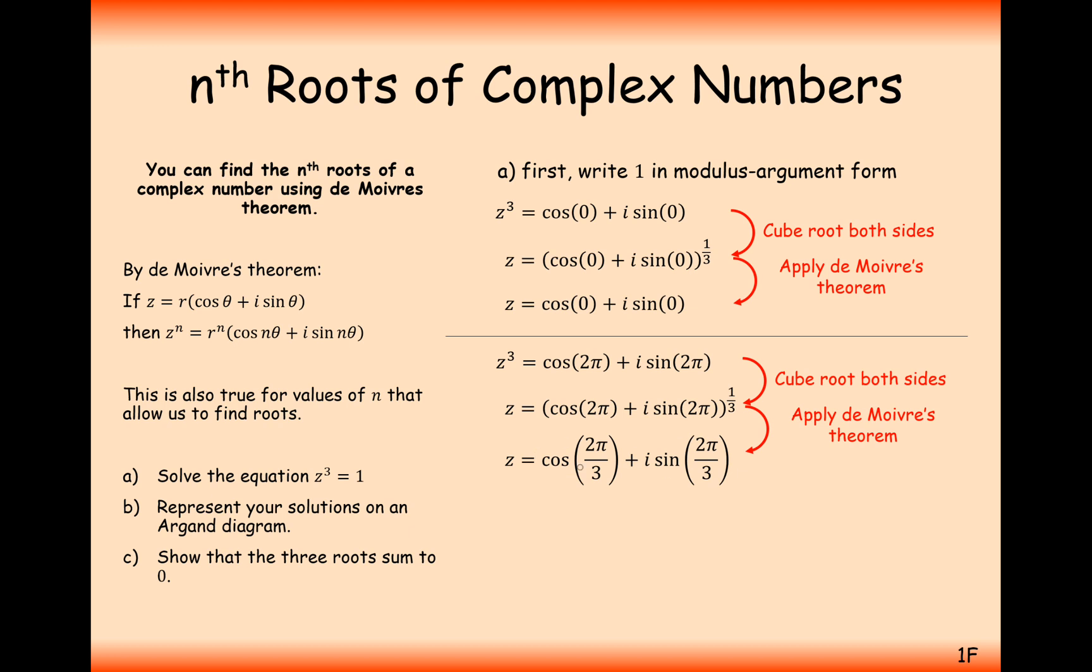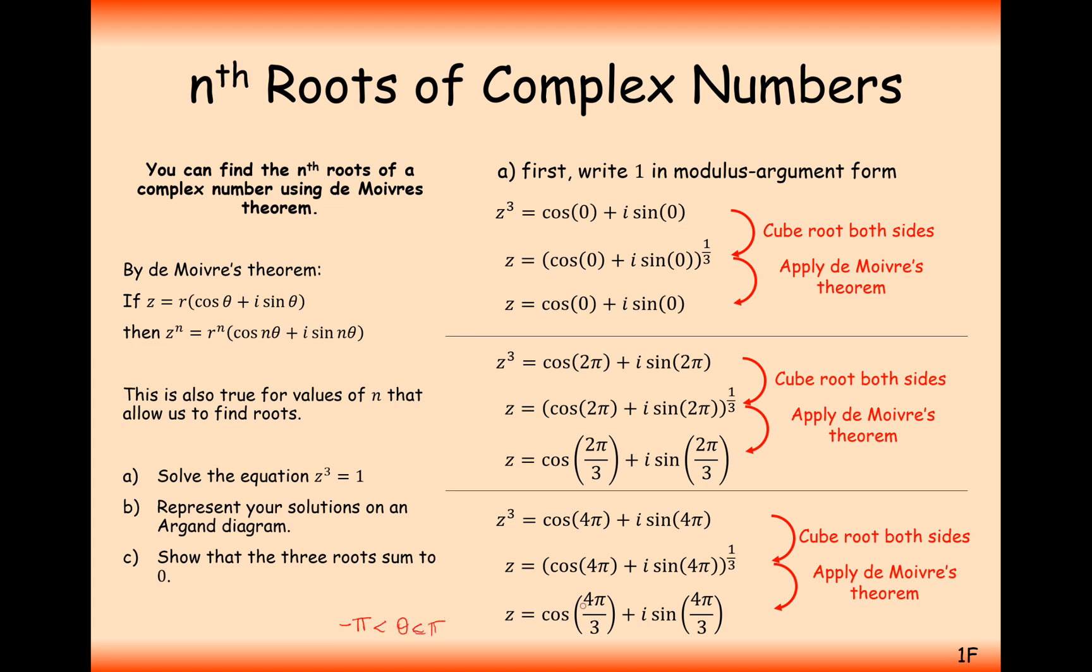So this is a second root of this complex number, of this equation here. And we could also go again, we could also go to 4π. Remember, it repeats every 2π, so we could just carry on doing this 2π thing. Cube roots both sides again, and then apply De Moivre's theorem again, and we'd get cos 4π by 3 plus i sine 4π by 3. But remember, we generally want our argument to be in between minus π up to π, and this is outside of the range of that argument. So in fact, we'll have to do a little adjustment and bring it back round from the bottom by minus 2π by 3 radians. And these are the three solutions to this equation.